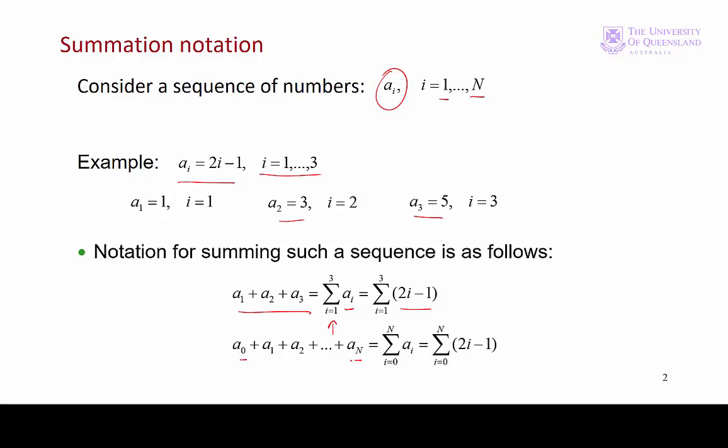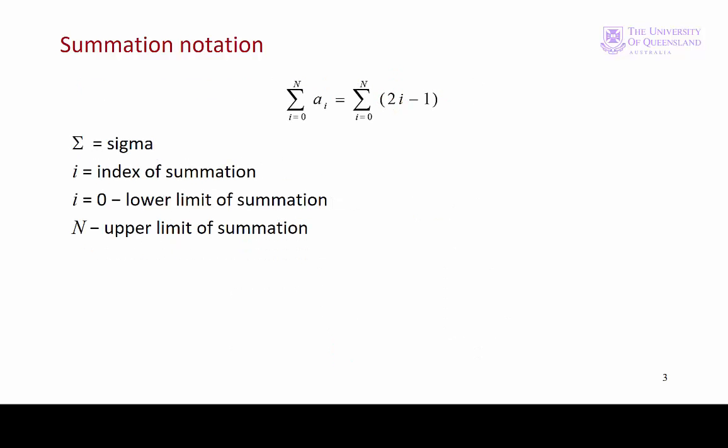Let's look at this summation notation in a little bit more detail. We have sigma, capital sigma there. The i that we've used there is our index of summation. Now, i is pretty typical, but other letters are also used. j, k, for example.